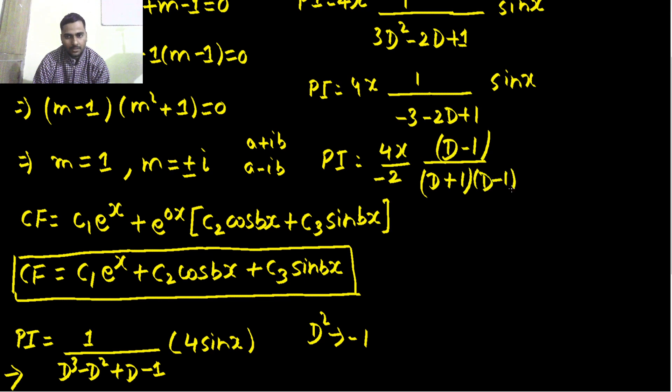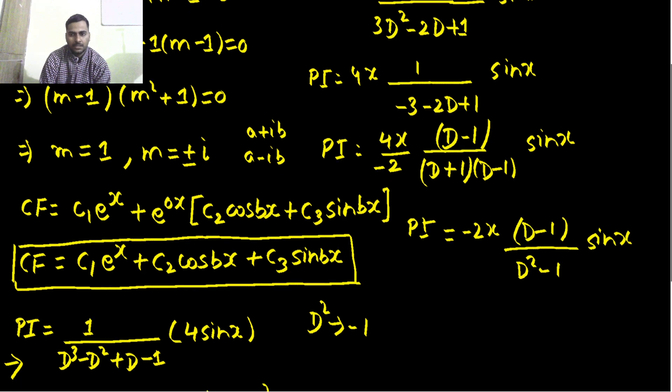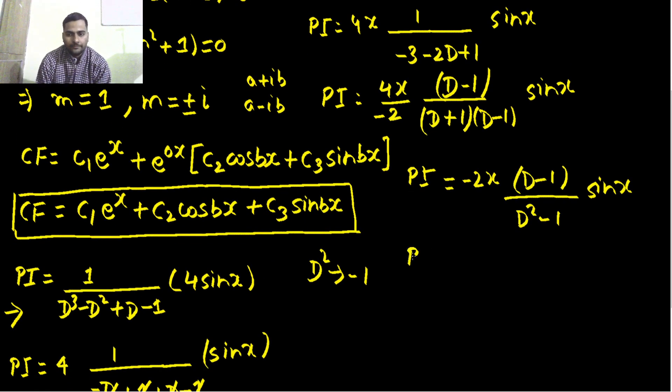Next step this becomes -2x, D - 1 in numerator, in denominator you get D² - 1 operating on sin x. Again D² to be replaced by -1, another -1 you will get -2.